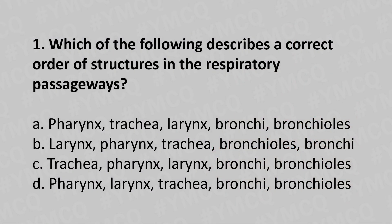Which of the following describes a correct order of structures in the respiratory passageways? Option a: pharynx, trachea, larynx, bronchioles. Option b: larynx, pharynx, trachea, bronchioles and bronchi.